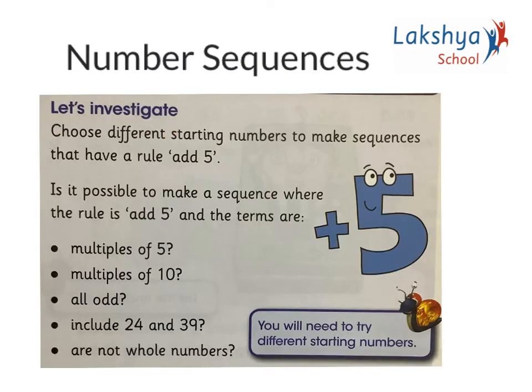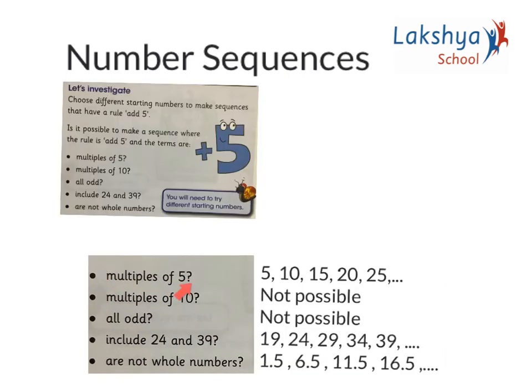Let's investigate. Choose different starting numbers to make a sequence that has the rule 'add 5'. You can choose any starting numbers. Then find out if these are all possible. Multiples of 5: I have listed here the multiples of 5, and it follows the rule of add 5. Multiples of 10: it's not possible because multiples of 10 follow the rule of add 10.